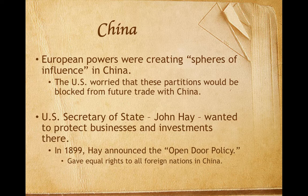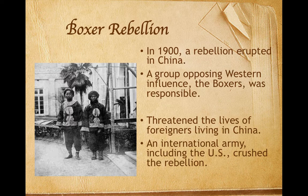Hay sent notes to the other major powers and declared his policy to be in effect. Just a few months later in 1900, a rebellion erupted in China, led by the Boxers, a group opposing any and all Western influence in China. The Boxer Rebellion threatened the lives of foreigners living in China. An international army with U.S. participation was sent to China where it crushed the rebellion. John Hay announced that the United States would oppose any attempt by other nations to use the rebellion as an excuse to dismember China.